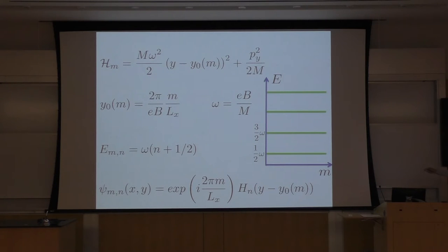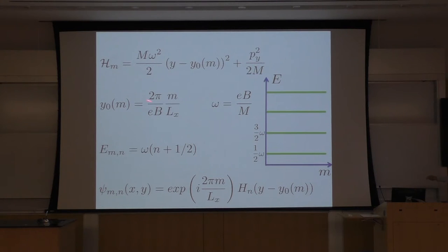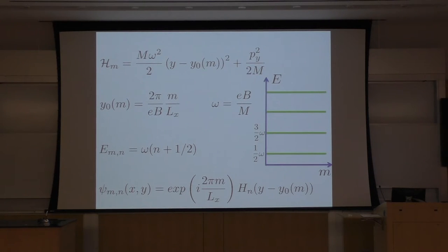What is the energy spectrum? The energy spectrum is independent of M, because the center of oscillation doesn't determine energy — energy is just a function of frequency. So energy doesn't depend on M but depends on N, which Landau level you are in. Energy is omega times (N + 1/2), so you get (1/2)omega, (3/2)omega, (5/2)omega, and so on. But each energy level is highly degenerate — there are many states with the same energy because M doesn't change energy.